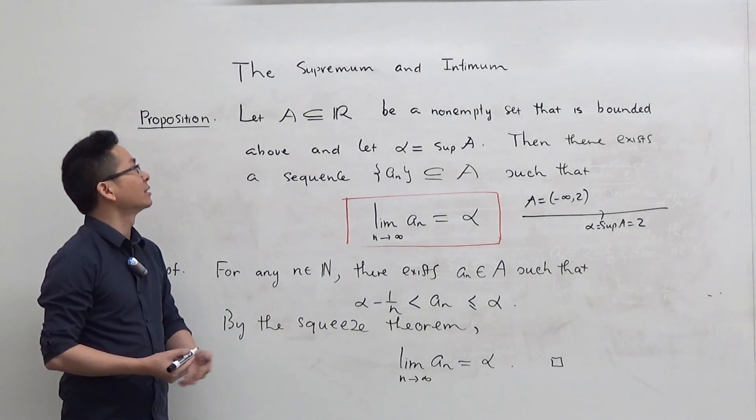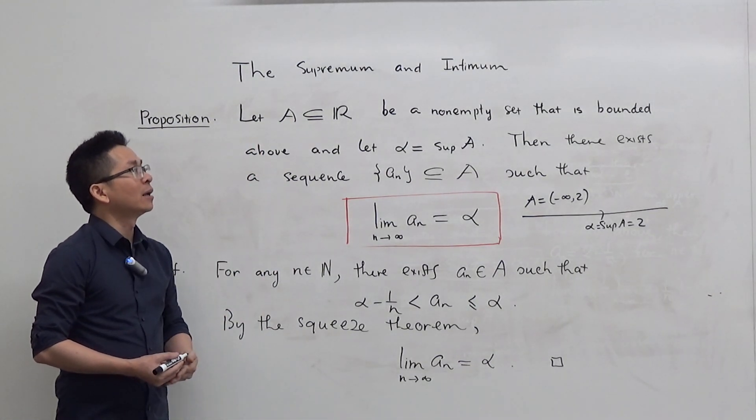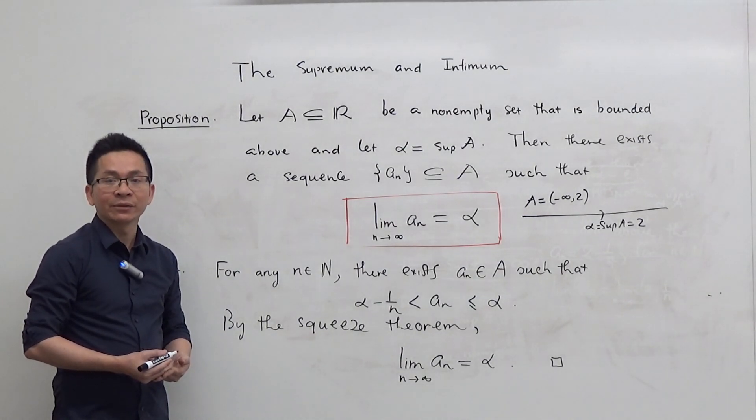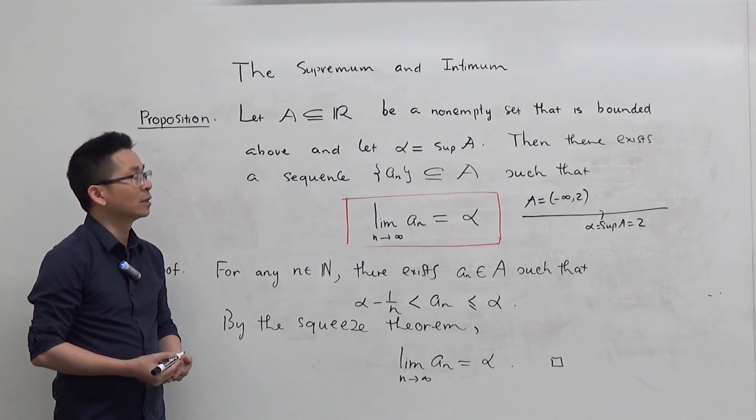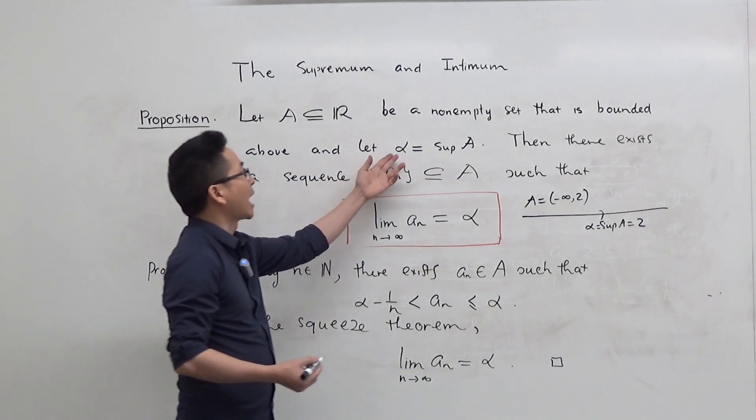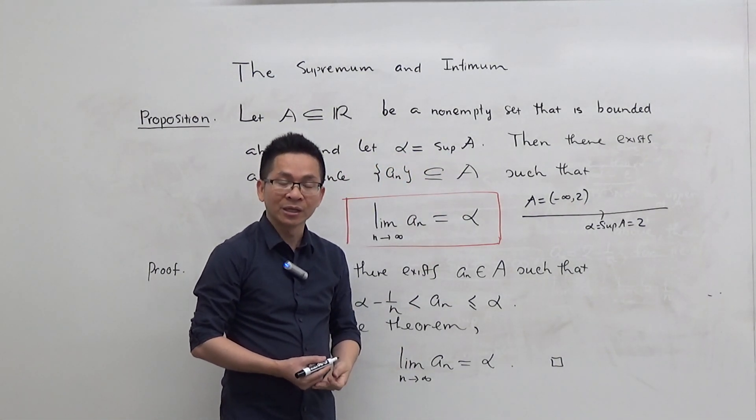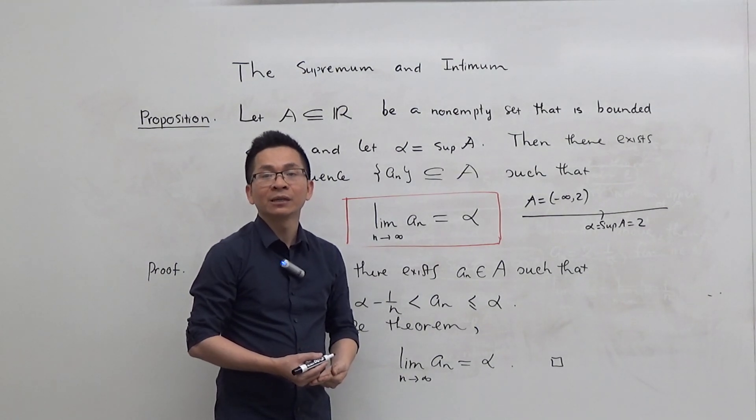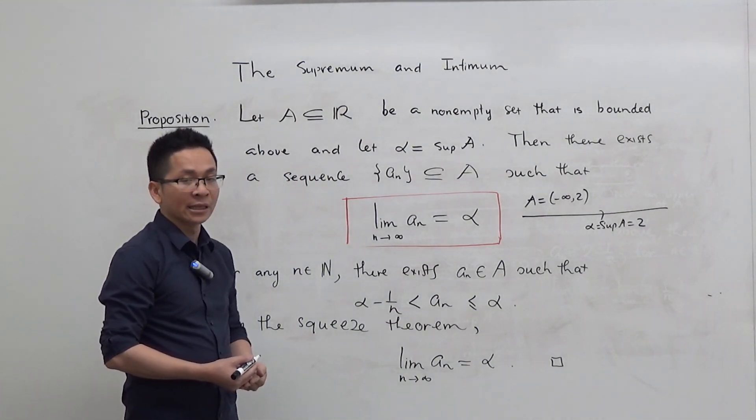This proposition sets the following. Let A be a non-empty subset of the real line that is bounded above. And let alpha be the supremum of A. As you know, alpha is a real number because of the completeness axiom.